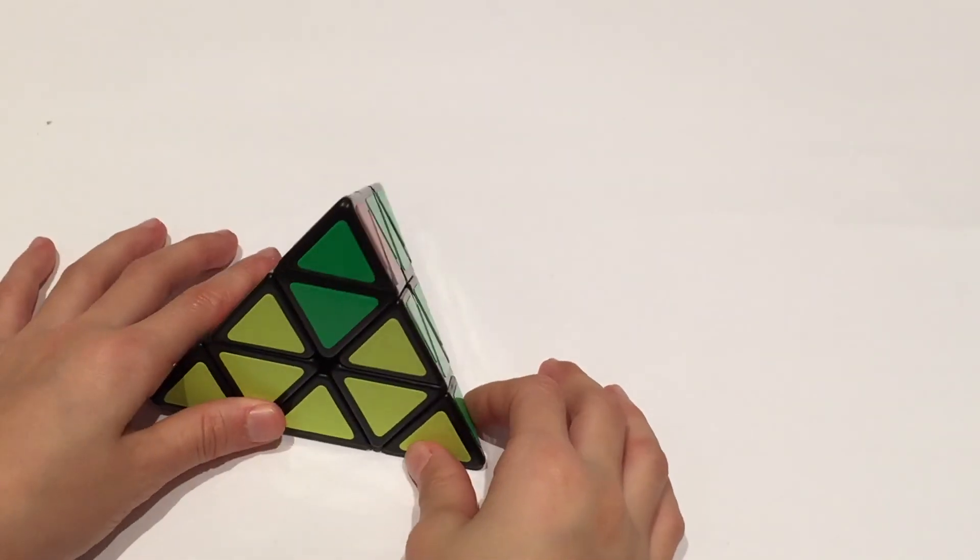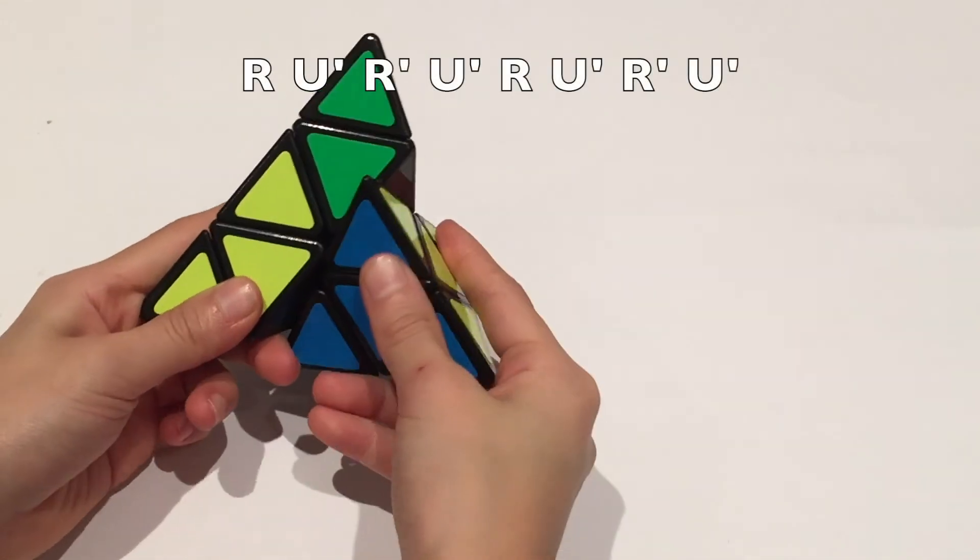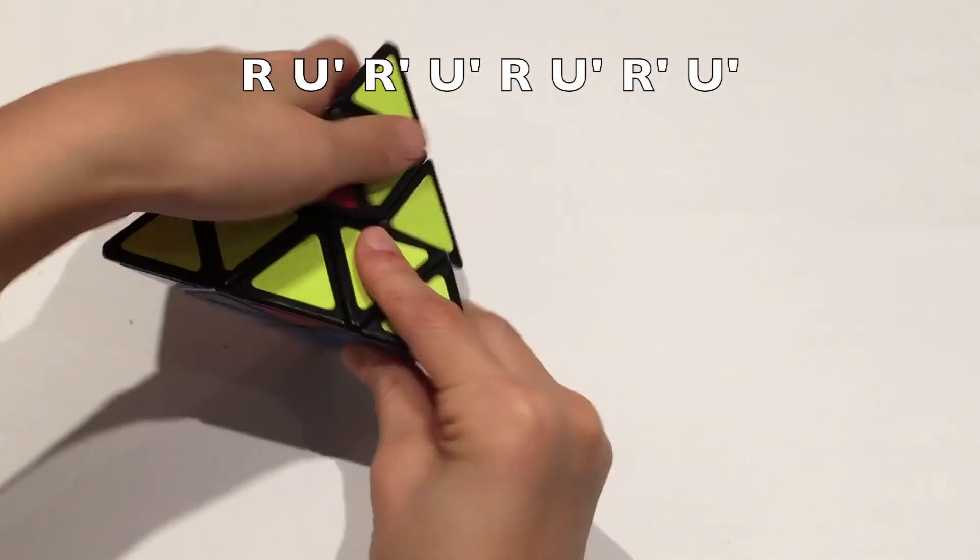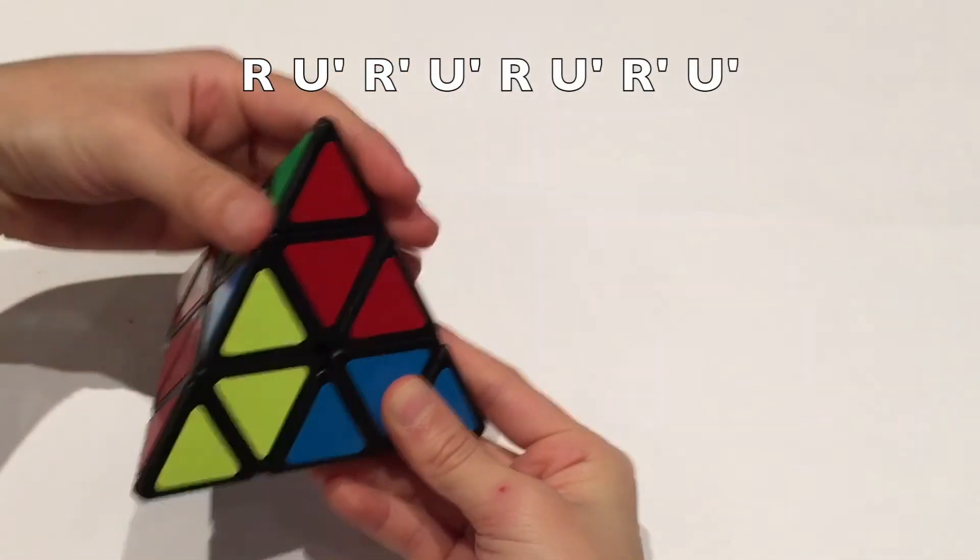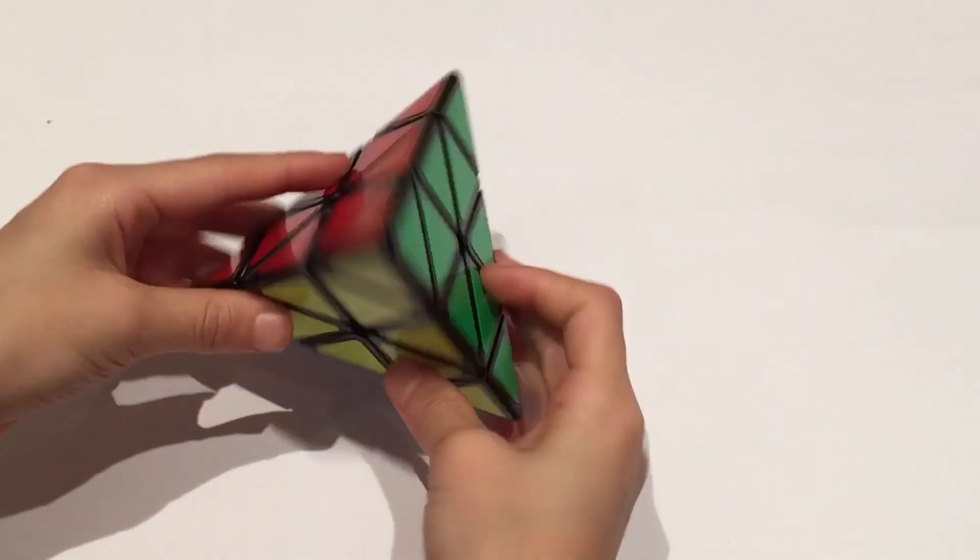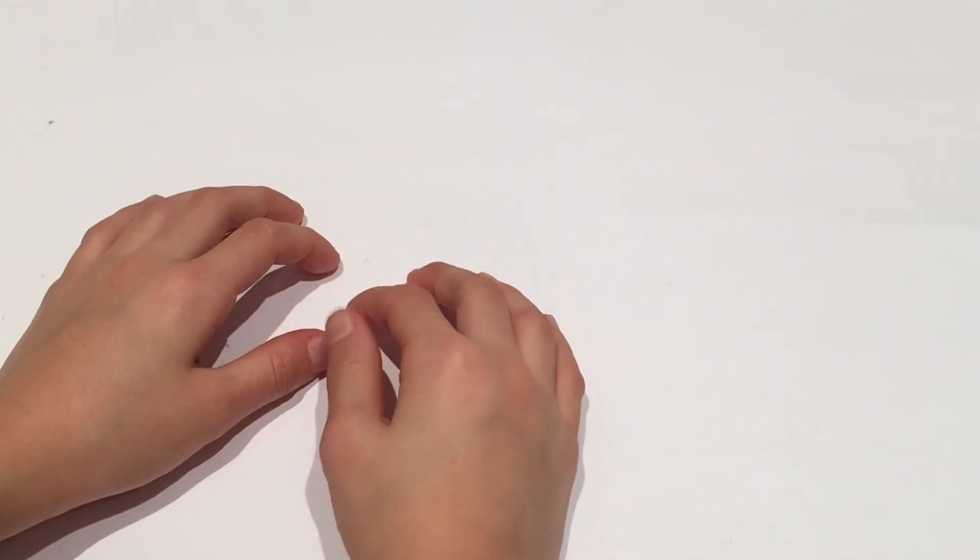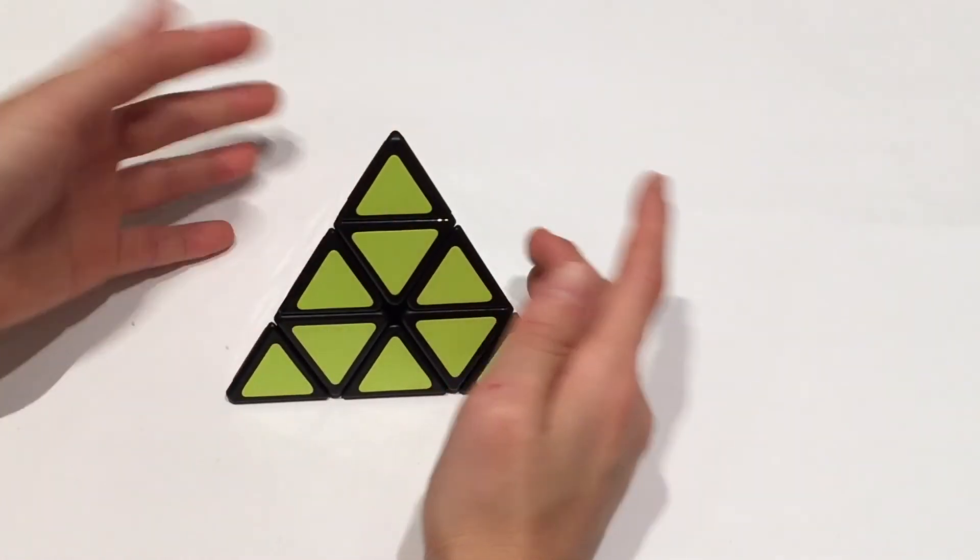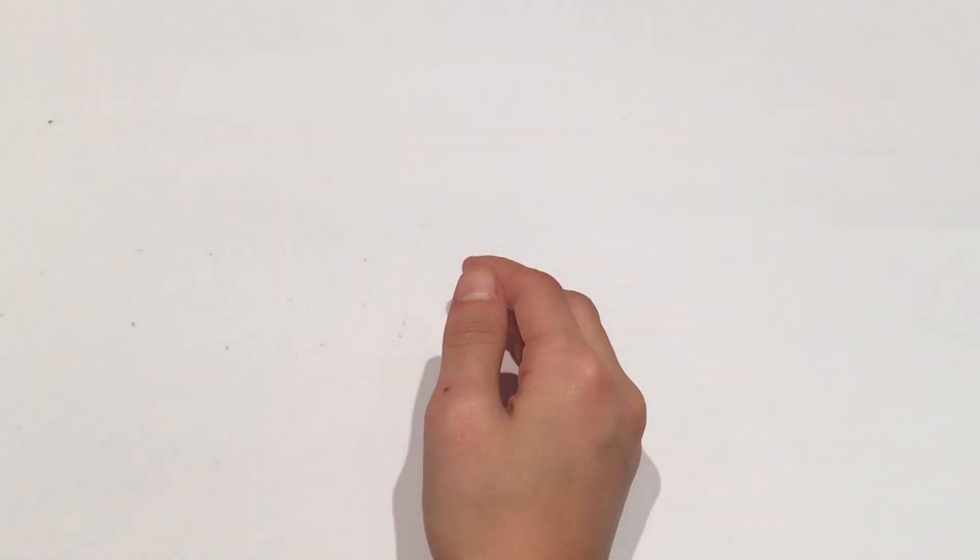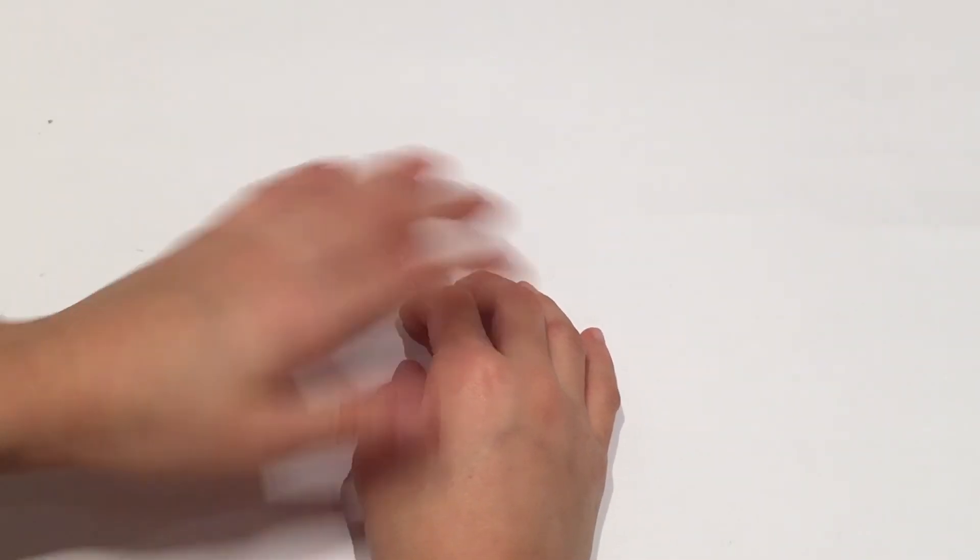If yours has to go counterclockwise, do this algorithm and there you go. I hope you guys enjoyed this video on how to solve a Pyraminx using a basic beginners method. I'll see you guys next time at KrazyCube and Carol. Bye!